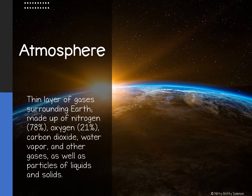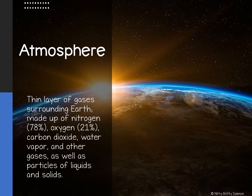Earth's atmosphere is made up of nitrogen, oxygen, carbon dioxide, water vapor, and many other gases as well as particles of liquids and solids. Nitrogen is the most abundant gas in the atmosphere making up 78% and is essential to living things. Oxygen, the second most abundant gas at about 21%, is used by plants and animals to help them turn food into usable energy. Oxygen and nitrogen together make up 99% of the dry air, and the other 1% is made up of carbon dioxide, argon, and small traces of other gases.